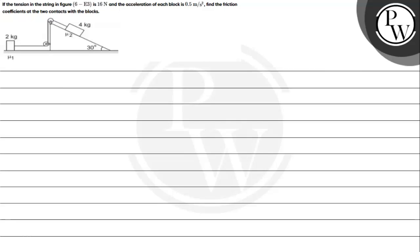Hello! Let's read the given question. The question says if the tension in the string as shown in the figure is 16 newton and the acceleration of each block is 0.5 meter per second square, we need to find the friction coefficient at the two contacts with the blocks. You can call them μ1 and μ2.